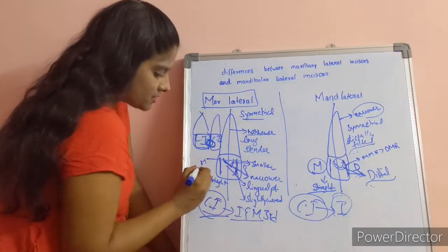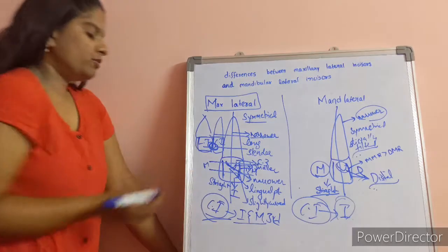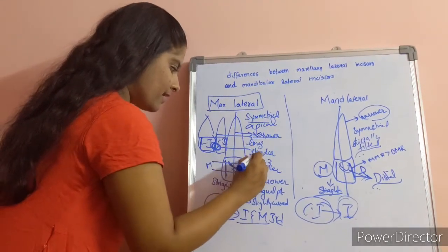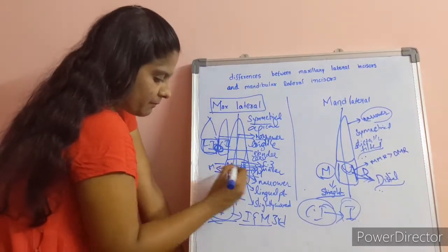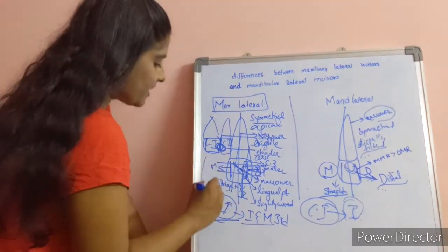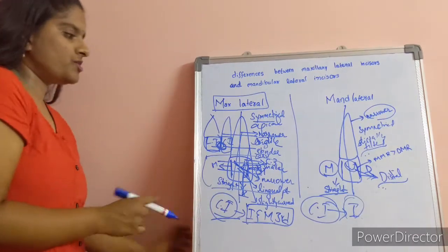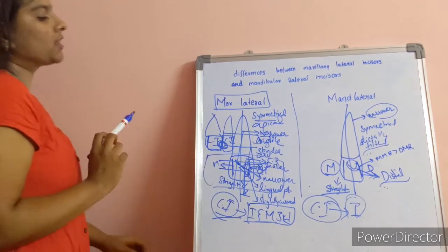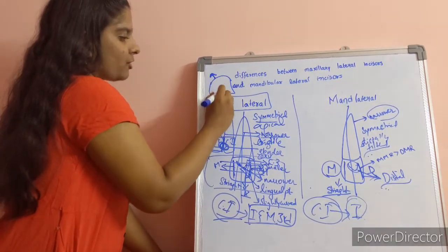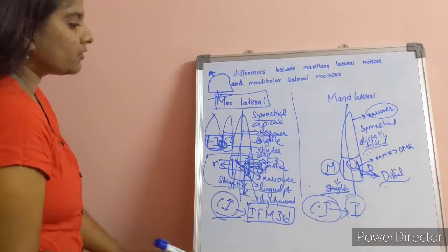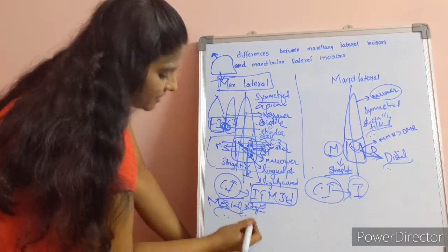The tooth is divided into three parts: incisor third, middle third, and cervical third. The root is also divided into apical, middle, and cervical thirds. The tooth is also divided into mesial, distal, and central portions for reference and learning purposes. Generally, at the cervical third the tooth is narrower, and at the incisor third it is wider. On the mesial side, deep developmental grooves are present on the root.